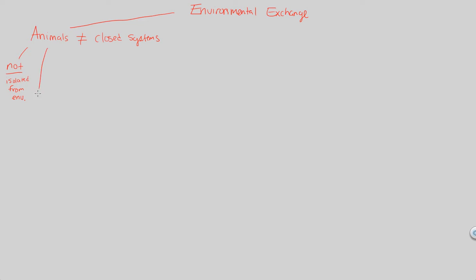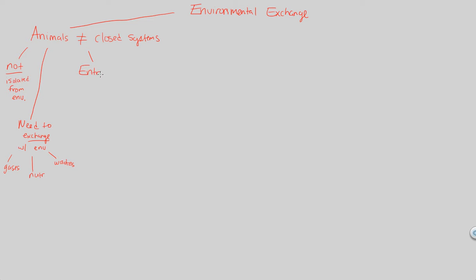Because of this interaction between us and the environment, animals like you and I need to exchange with the environment. Simple things we exchange include gases — we need oxygen from the environment and we need to release our carbon dioxide waste. We also exchange nutrients with the environment, and waste must be released as well. These are just three examples of ways that we exchange with our environment.